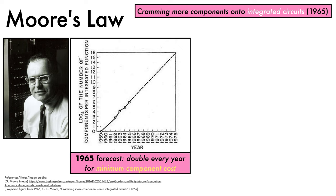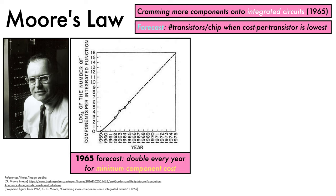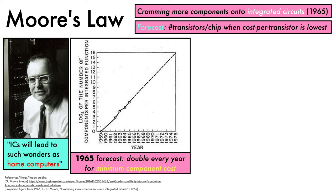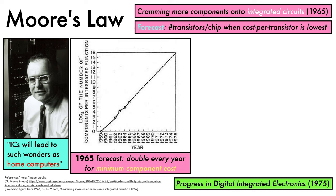Specifically, the forecast is about the number of transistors that will be packed onto each chip when the cost per transistor is lowest. Moore knew that this projection had major implications, stating that integrated circuits will lead to such wonders as home computers and much more besides. In a 1975 article, he produced a new forecast based on a careful analysis of the factors driving progress, forecasting a doubling every two years for the next decade.